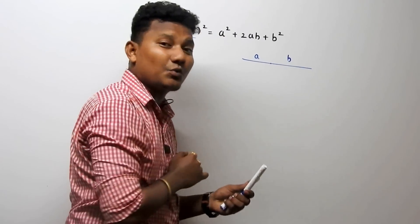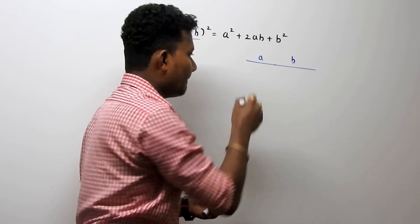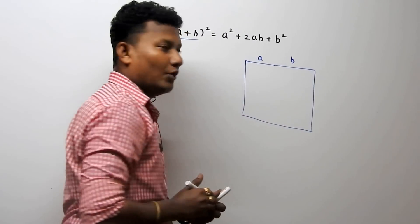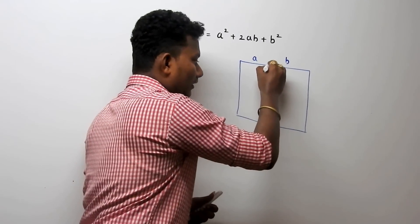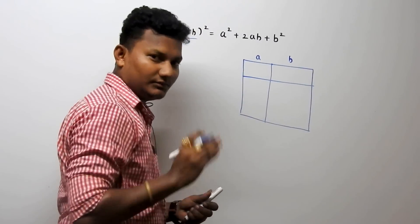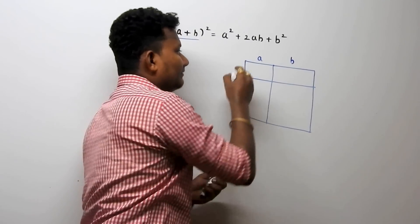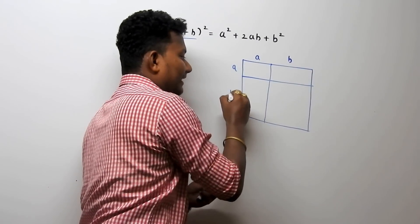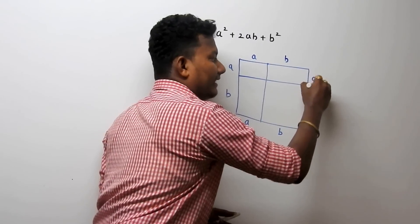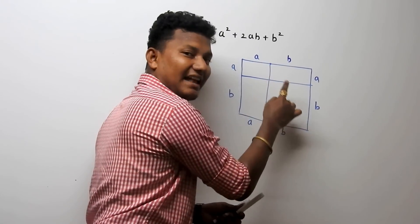To find (a + b) whole square, I will draw a square with side (a + b). Now, focus here — I will draw a line from here and one more line, dividing the square. For each side, this section is 'a' and this section is 'b'. So now I can say there are four boxes: one, two, three, and four.